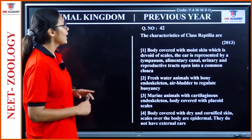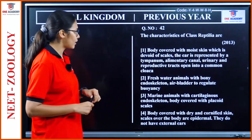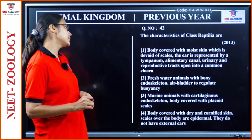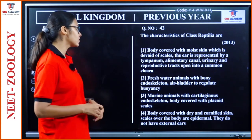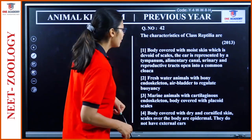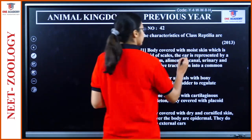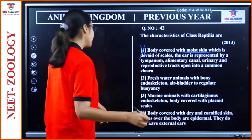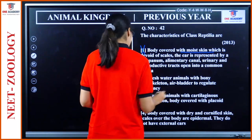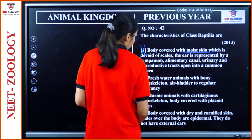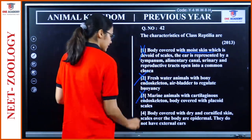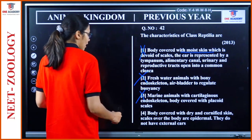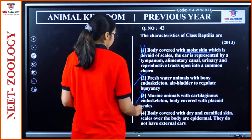Question 42: 'Characteristics of class Reptilia.' Body covered with moist skin devoid of scales — wrong, reptiles have dry skin. Freshwater animal — no. Marine animal — no. Body covered with dry and cornified skin, scales over the body are epidermal — yes, they do not have an external ear. Option 4 — Porifera reference for canal system is separate — the reptilia answer is dry cornified skin with epidermal scales.